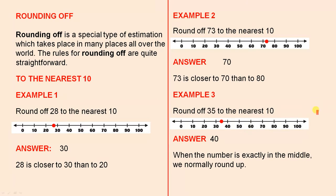Round off 35 to the nearest 10. The answer is 40. When the number is exactly in the middle, we normally round up.